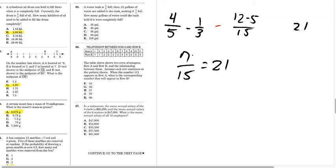So we have 7 fifteenths of the tank is equal to 21. So if we want to find what 1 fifteenth of the tank is, we just divide by 7. So we're going to end up with 3 equals 1 fifteenth. 15 times 3 is 45. That is answer B.